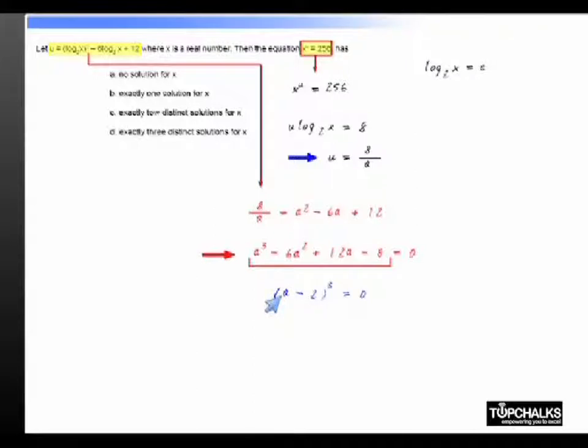If A minus 2 whole cube equal to 0, it implies that A is equal to 2, or log x to the base 2 is equal to A. Hence x must be equal to 2 to the power of A, or 2 squared equal to 4.